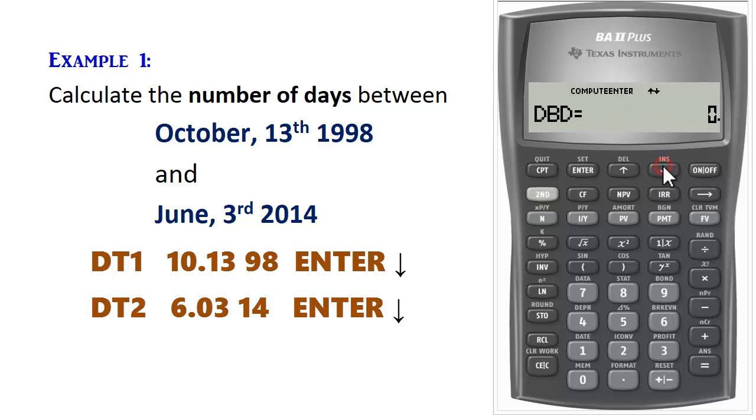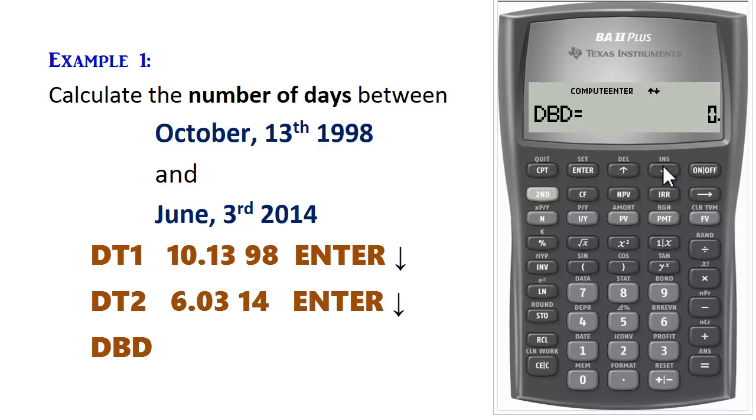Scroll down again. It displays DBD, which means days between dates. And that's what we want, the number of days between those two dates. So just press Compute.